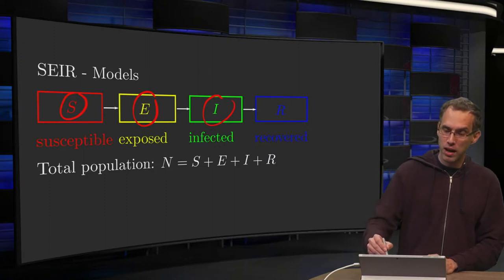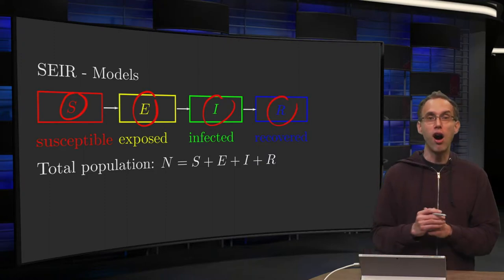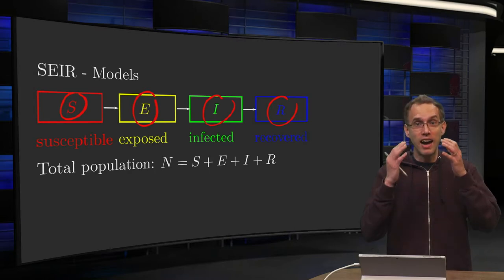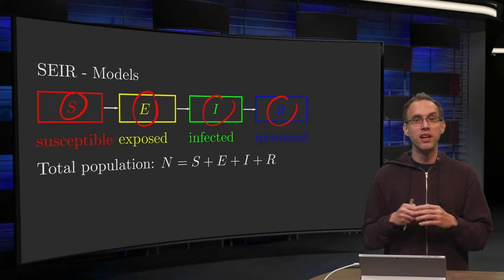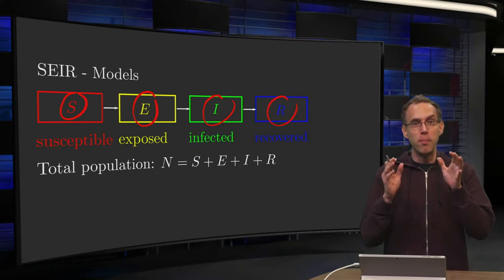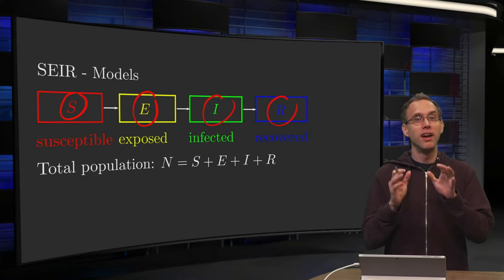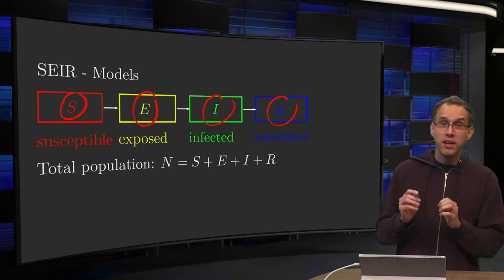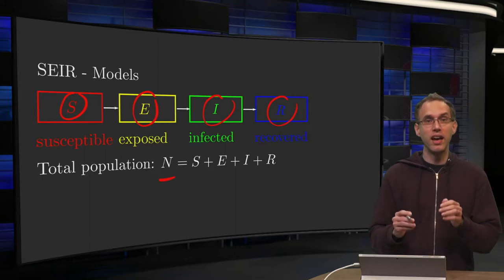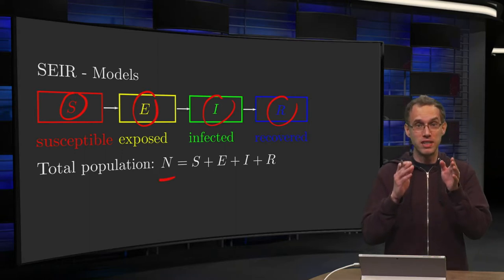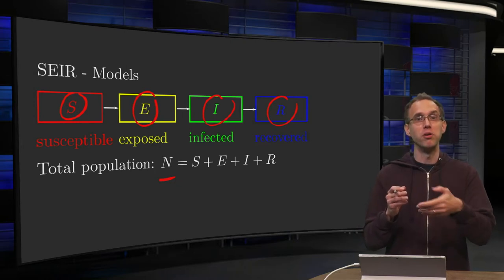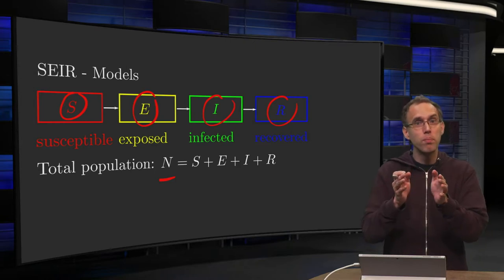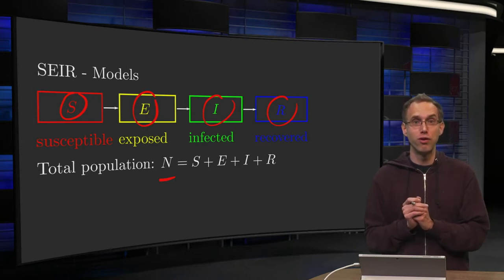And at a certain moment people will move to the group R, recovered, which means that they are either recovered and are not sick anymore, or they have deceased due to the illness. Then they are also put in the group recovered from a mathematical perspective. Then the total population N is of course the sum of S plus E plus I plus R, because you are either susceptible or exposed or infected or recovered. So the whole population is split up in those four groups.